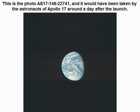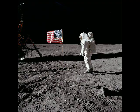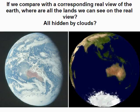This is photo AS17-148-22741, which would have been taken by the astronauts of Apollo 17 around a day after launch. On a close-up of this photo, we can clearly see Australia, but strangely we can see no other land. If we compare with the corresponding real view of the Earth, where are all the lands we can see on the real view?